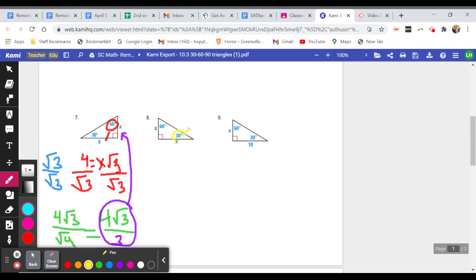For number eight, I'm given the side directly across from my shortest angle, which is four. So the relationship with a 60 degree angle, the 60 degree angle is the length of the shortest side, which is four times the root of three. So there's my final answer for number eight.